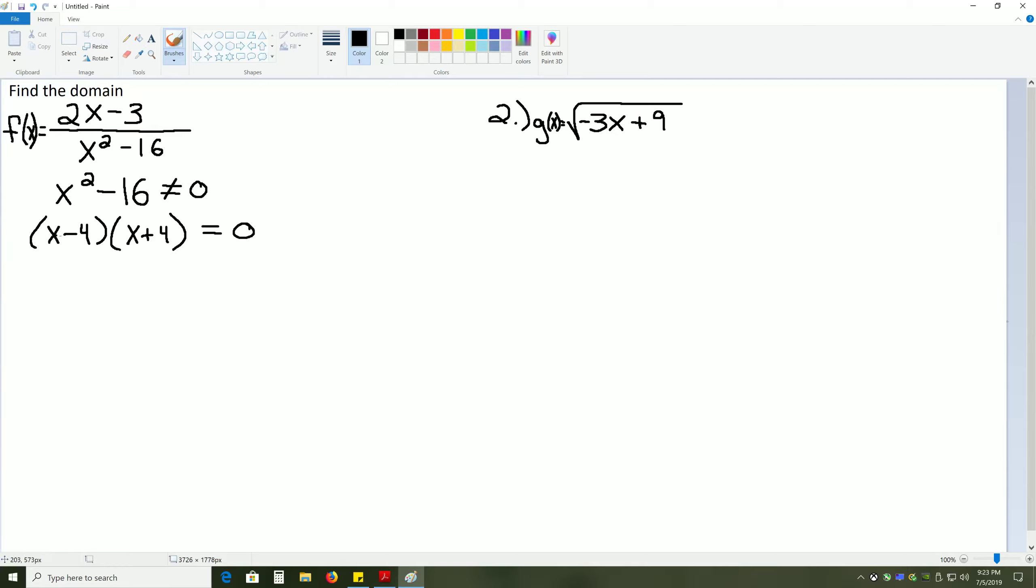And now we're going to set each of these terms equal to 0. Because when you have something completely factored, each factor can be set equal to 0 if the entire multiplication is equal to 0. So, we get x minus 4 equals 0, and x plus 4 equals 0. And if we add 4 to each side, that'll cancel out this negative 4 here, leaving us with x equals positive 4.